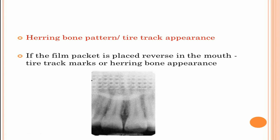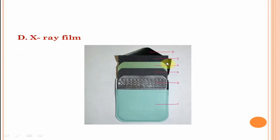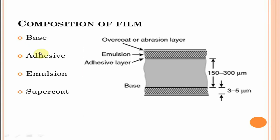Next is the x-ray film. This is the main component of the film packet. When we take a radiograph, the image is formed on this x-ray film. The composition of the film is base, adhesive, emulsion and supercoat.